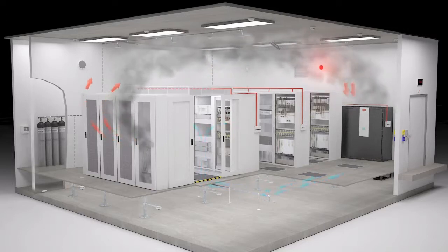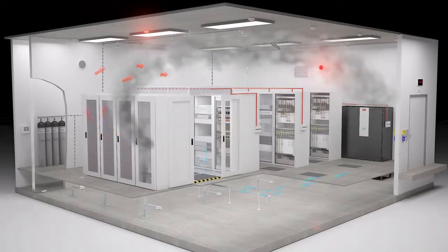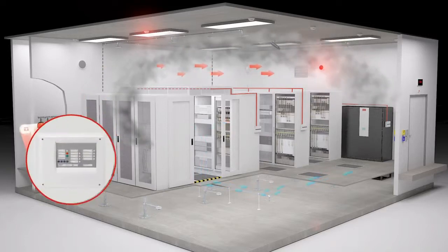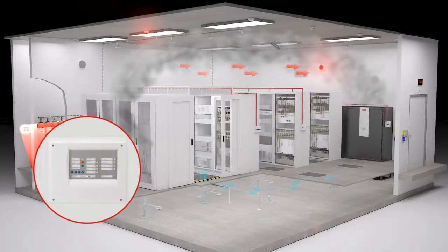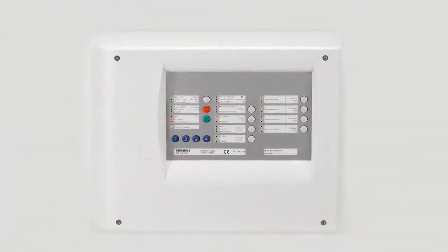As additional smoke develops, the point type smoke detector triggers a fire alarm and signals to the extinguishing control panel. The extinguishing control panel shows that two zones are in alarm state.